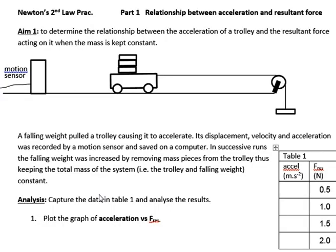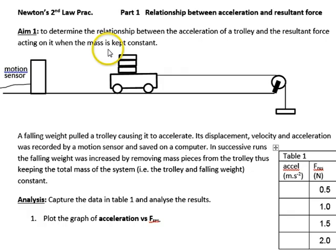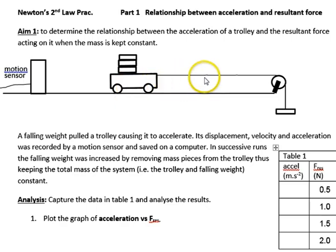So now we are going to look at practically investigating this relationship. Aim one is to determine the relationship between the acceleration of a trolley and the resultant force acting on it when the mass is kept constant. We have a situation of a trolley that is being pulled by a string hanging over a pulley with a weight that is falling due to gravity.